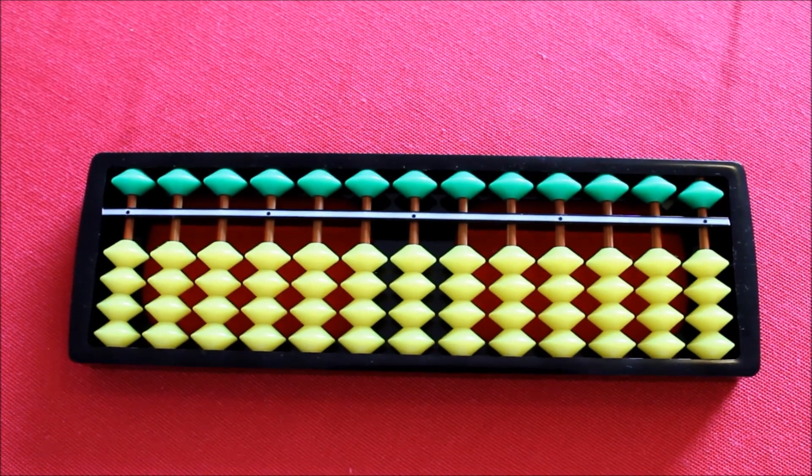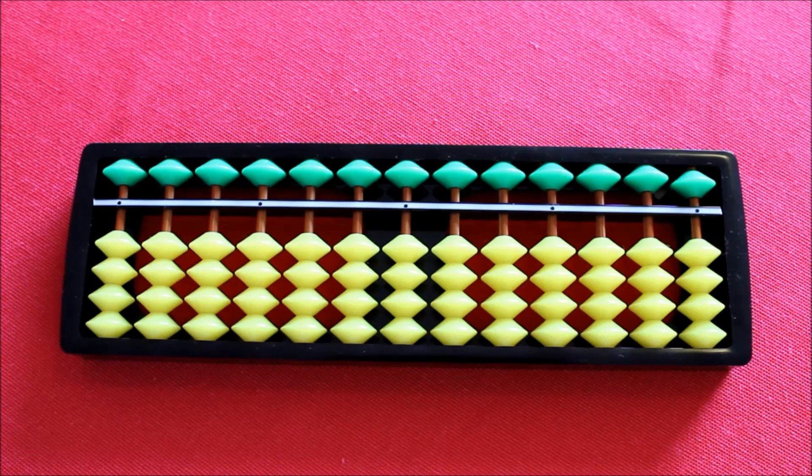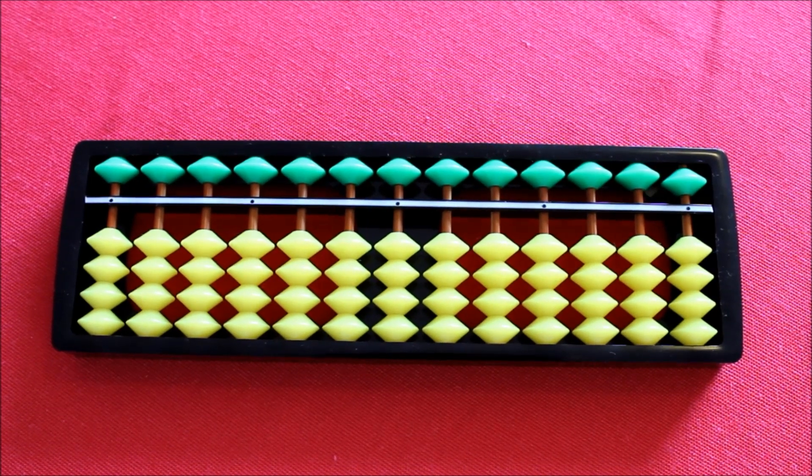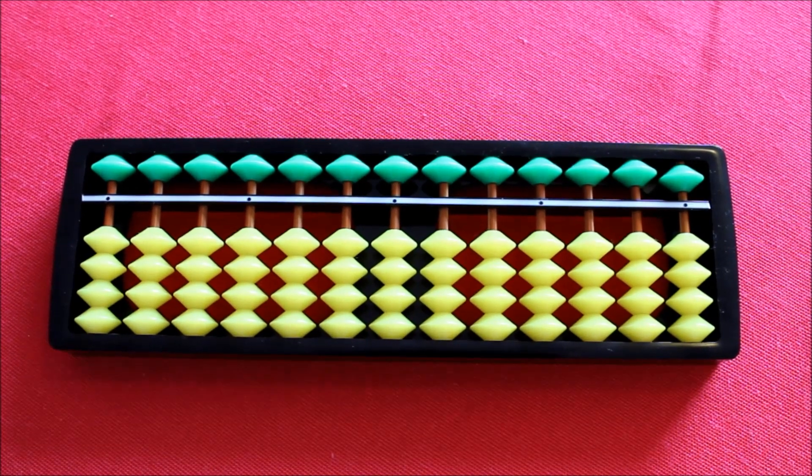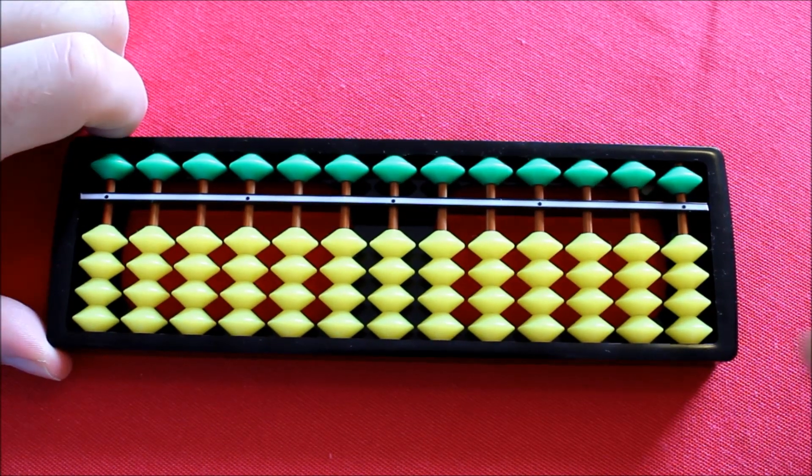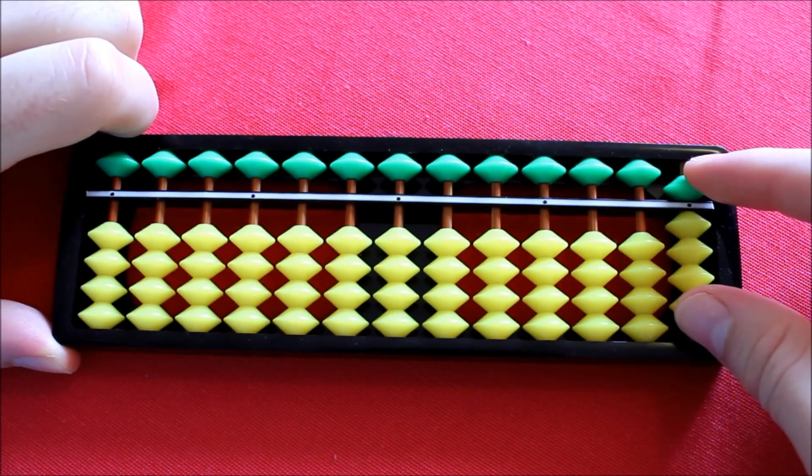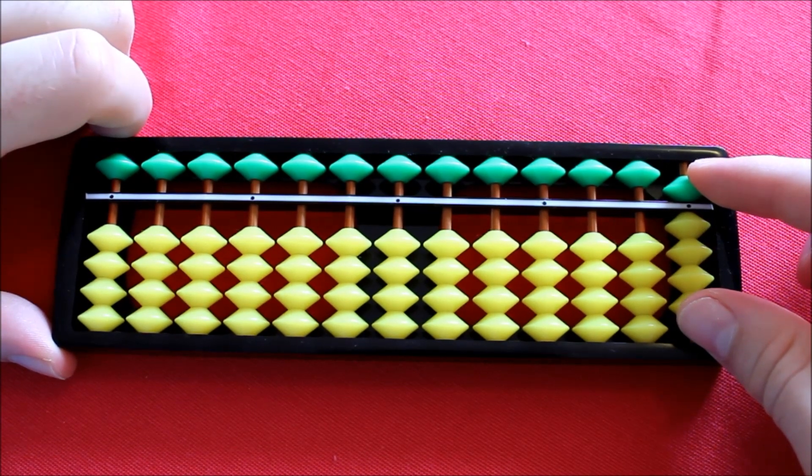I'll start by showing you how to add by 9. On some occasions, rarely, you'll be able to do this by just moving up the beads in one column. So if we start with 0 on the Soroban, as we have now, adding 9 is simply a case of doing that in that first column.